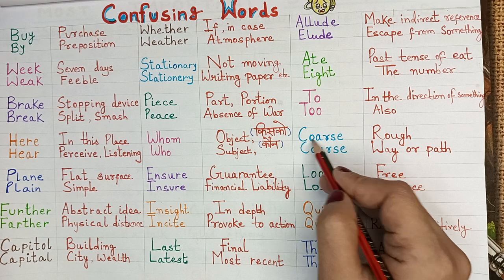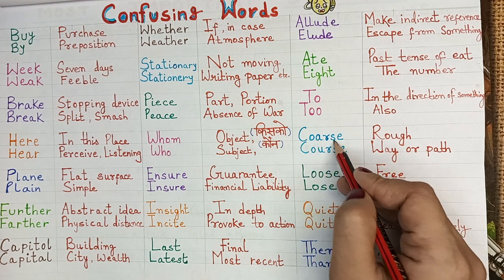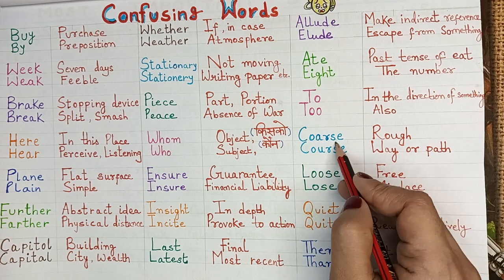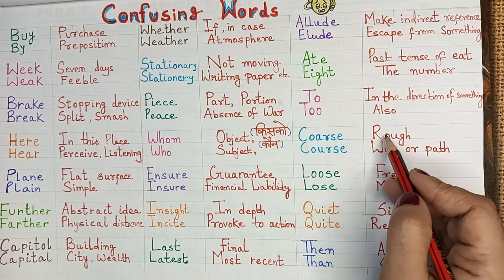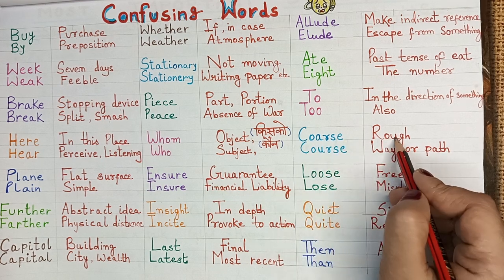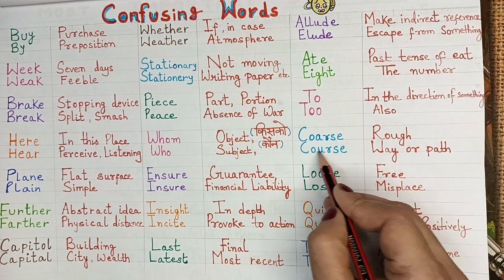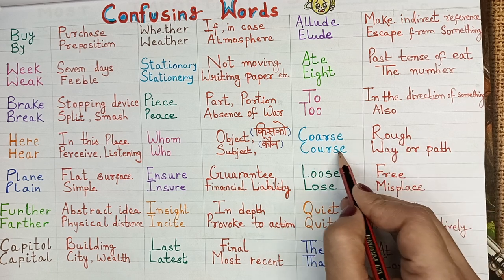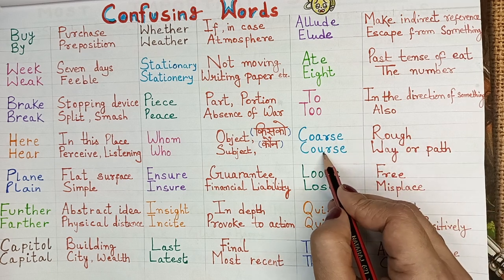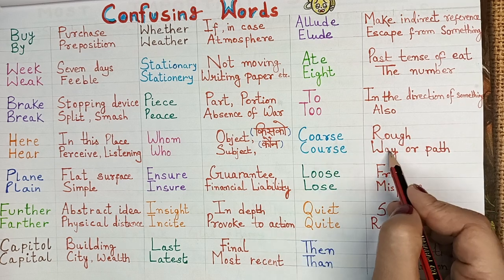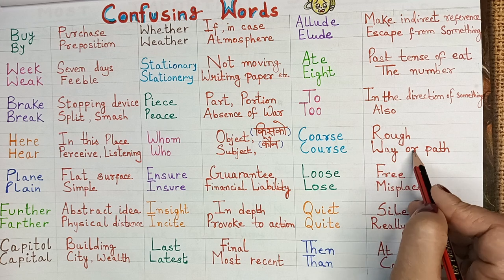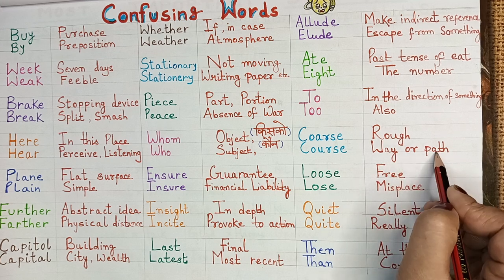C-O-A-R-S-E — coarse means rough. C-O-U-R-S-E — course means path.